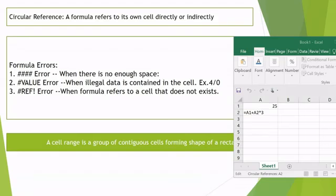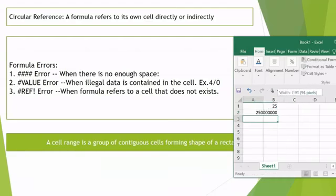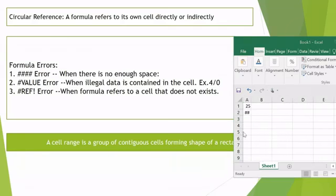Now let us see what are the different kind of errors that can be thrown when I am using formulas. Like suppose if I am having a very huge number as an answer and I try to store it in a smaller column then it will throw me this error. I made it even small, you can see that it is showing me hash sign because there is no enough space for it to be displayed. If I make it bigger it will show me the value back again.